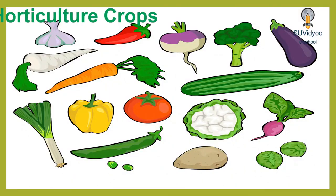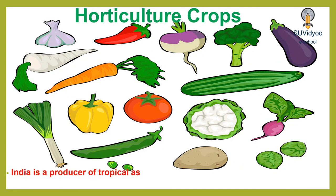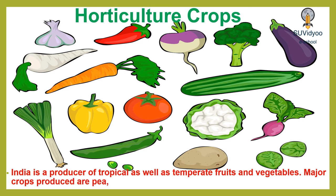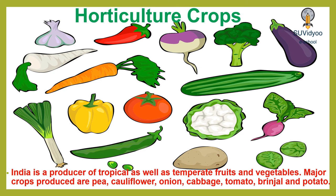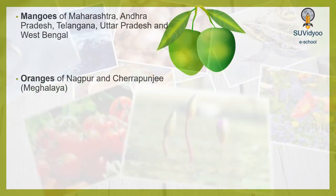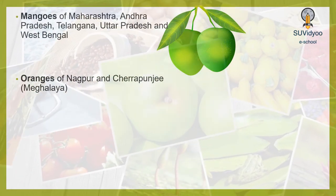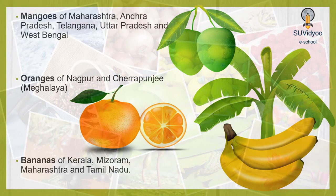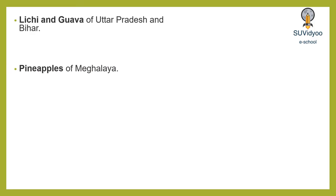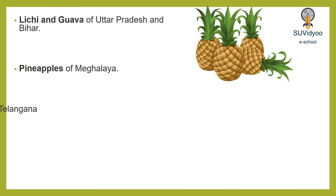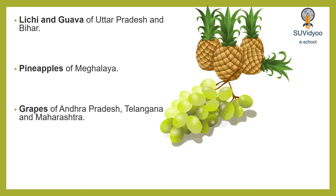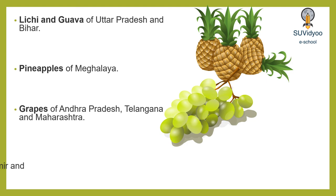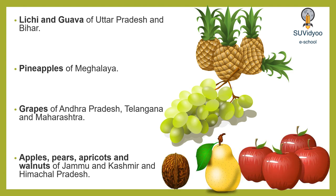Horticulture includes production of fruits and vegetables. India is a producer of tropical as well as temperate fruits and vegetables. Major horticulture crops produced in India are pea, cauliflower, onion, cabbage, tomato, brinjal and potato. Mangoes are majorly grown in Maharashtra, Andhra Pradesh, Telangana, Uttar Pradesh and West Bengal. Oranges are famous from Nagpur and Cherrapunji, Meghalaya. Bananas are famous from Kerala, Mizoram, Maharashtra and Tamil Nadu. Uttar Pradesh and Bihar are famous for lychee and guava. Pineapple grows well in Meghalaya. Grapes are grown in Andhra Pradesh, Telangana and Maharashtra. Apples, pears, apricots and walnuts grow well in Jammu and Kashmir and Himachal Pradesh.